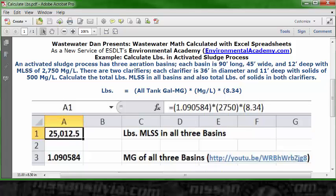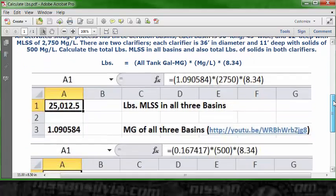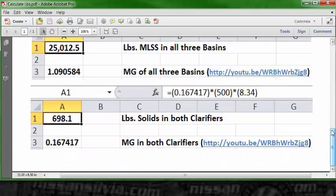to get 25,012.5 pounds of MLSS in all three basins. So that's the answer for that one. Slide on down and look at the problem for the pounds of solids in a clarifier. You see